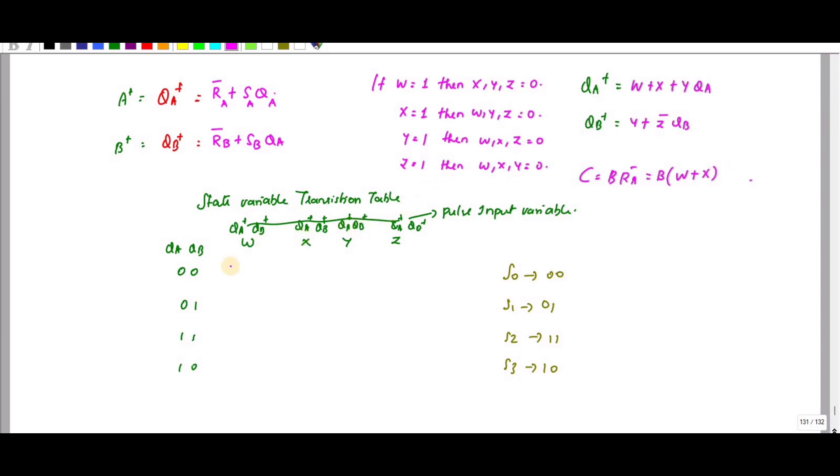First let us find out the output. If B is 0, the output will be 0.